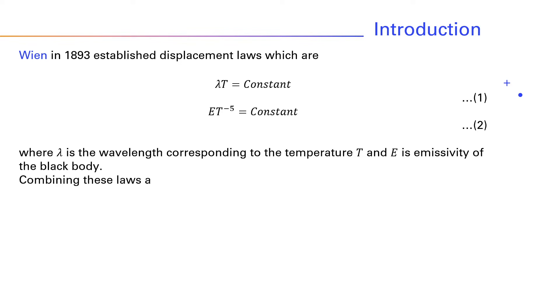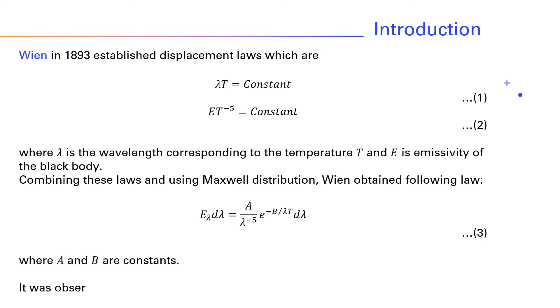Combining these two laws and using Maxwell distribution, Wien obtained the following law: E_λ dλ = A/(λ^5) × e^(-B/λT) dλ (equation 3), where A and B are constants. It was observed that this law is valid only for the short wavelength region.